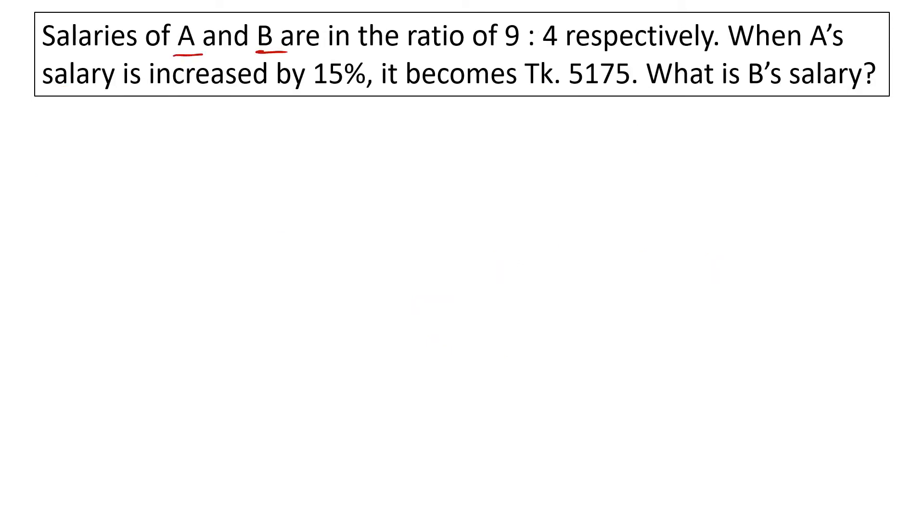Salaries of A and B are in the ratio of 9 is to 4 respectively. When A's salary is increased by 15%, it becomes 5,175. What is B's salary? A and B are in the ratio of 9 is to 4, so A is 9x and B is 4x.